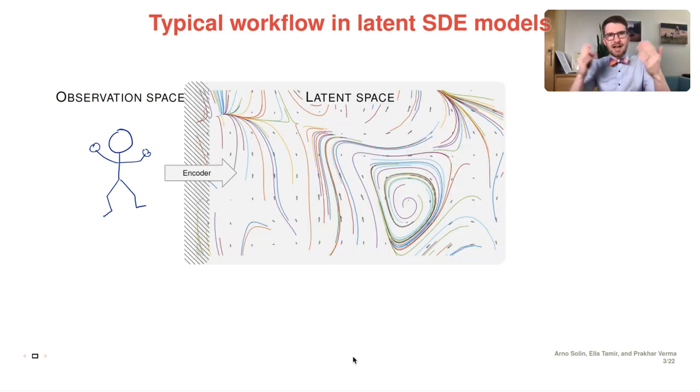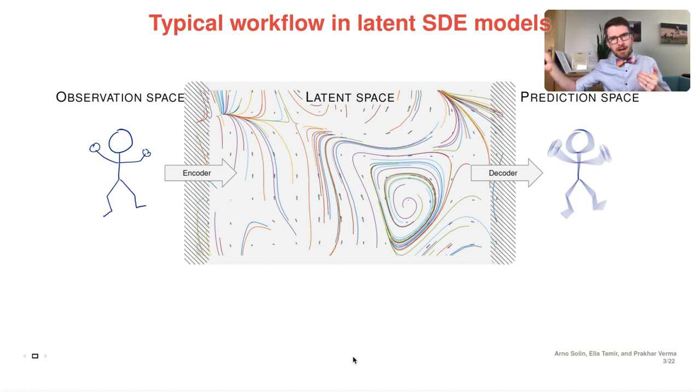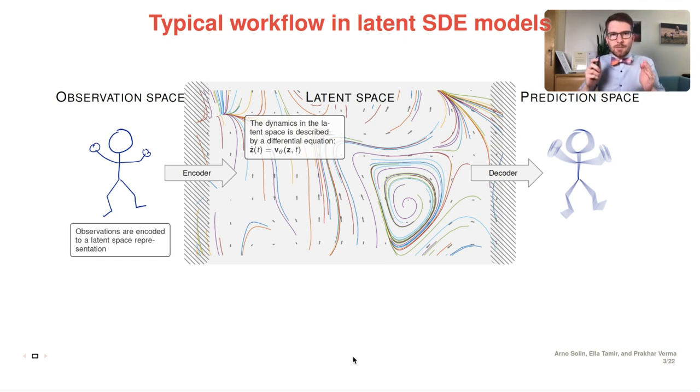The typical workflow in latent SDE models is that you have some sort of observation space, you model dynamics in some sort of latent space, and then you map back to predict things in the observation space. The model for the dynamics is to be captured by an ordinary or stochastic differential equation that models change in the latent space.